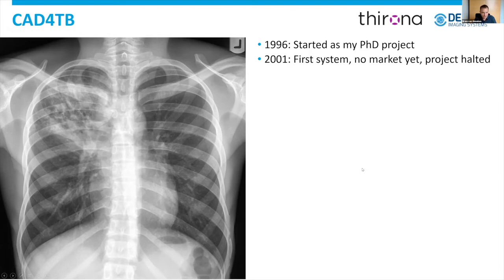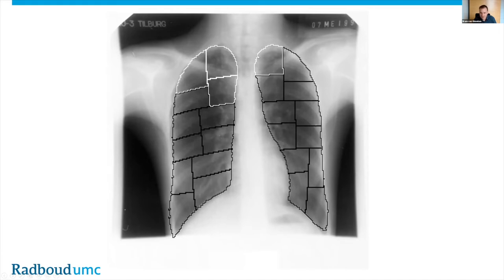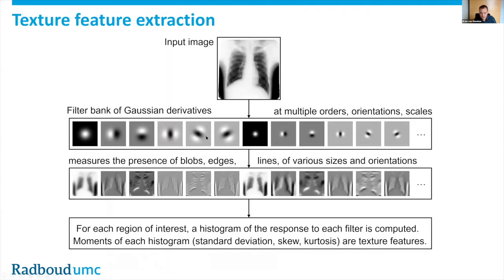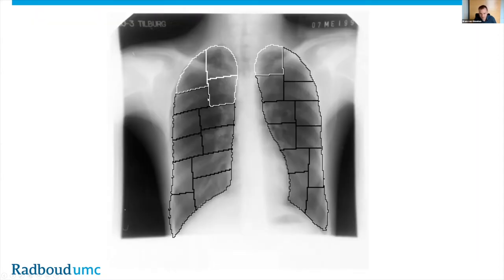The project I started in 1996, CAD4TB, started as a PhD project using a machine learning approach, and in 2001 we had a first system. But at that time, the market for digital X-ray machines — which you need to have the image in digital format to feed to the computer — wasn't really existing. So we temporarily stopped. What I basically did was teach the computer how to find the lung fields, divide them into small regions, compute a set of numbers based on filters applied to the image, and the computer then processes these numbers and says whether each region is normal or abnormal. You sum that up and get a score for the image — a classical machine learning approach.